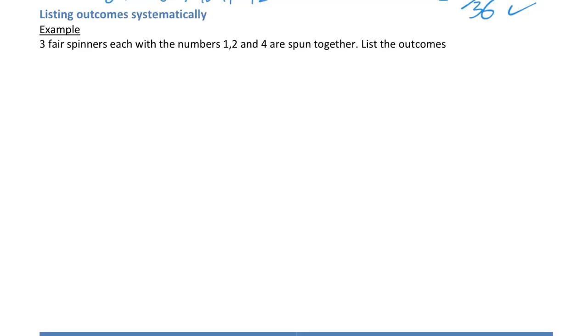This example says three fair spinners, each with the numbers 1, 2, and 4 are spun together, list the outcomes. So I'm going to list the first set of outcomes, and then I'm going to pause the video. I'm going to write down the rest of them as well. So first set of outcomes, you have to start somewhere. I'm going to start with having a 1 every time on the first one. I could have 1, 1, 1. Because if you have three spinners, they all have 1 on them. I could also have 1, 1, and 2. I could also have 1, 1, and then 4. So you can see how I'm systematically going through this.